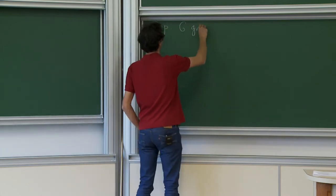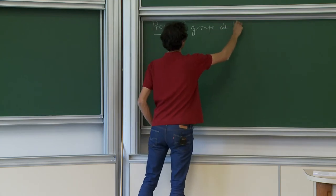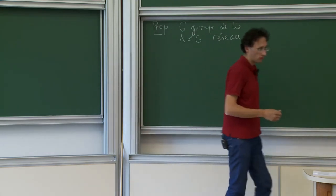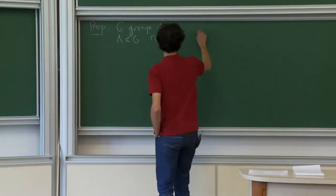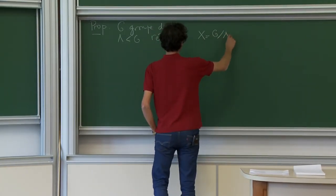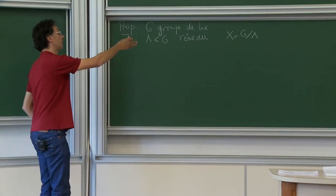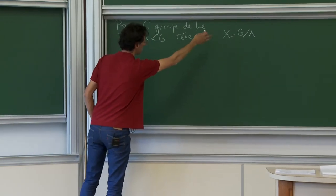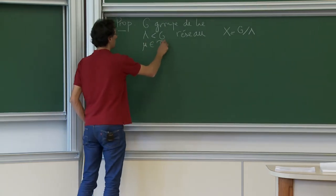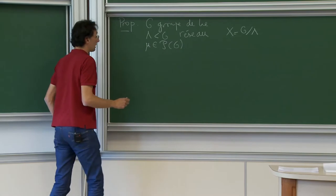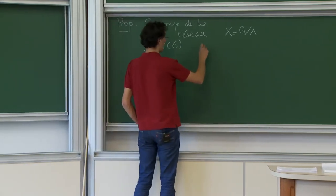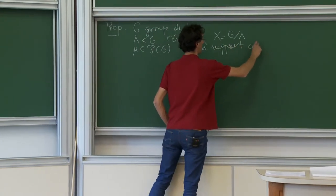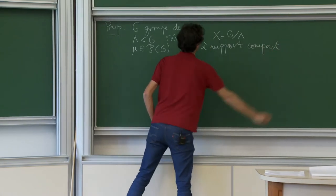G is a Lie group, Lambda is a lattice — this is my usual situation. X is always the quotient G/Lambda, and I'm interested in the dynamics of a subgroup of G on this quotient. I take μ, a Borelian probability measure on G. I suppose μ has compact support — this is really at the heart of the derivative hypothesis.